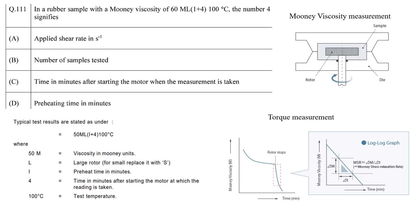The formula tells you about the final torque at 100 degrees Celsius after 4 minutes of test running time, with 1 minute of preheating time. So the Mooney viscosity is the value of torque at 5 minutes from the beginning of the test. The correct answer is C.